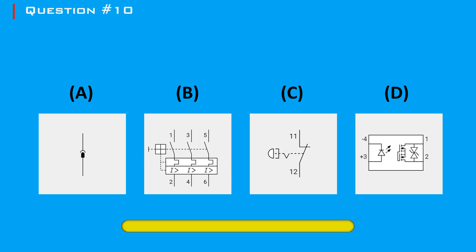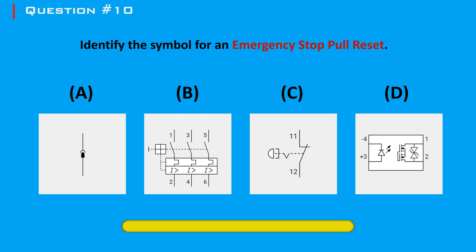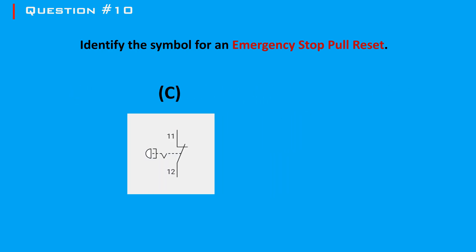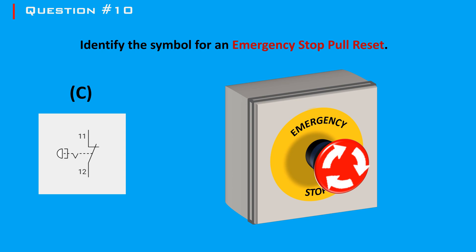We've reached the final question of our industrial electrical diagram symbol quiz. Let's see if you can identify the symbol for an emergency stop pull reset. Understanding these symbols isn't just about passing a quiz — it's about ensuring safety and efficiency in your work environment. Thanks for joining us, and don't forget to like, subscribe, and hit the notification bell so you never miss out on our latest videos.